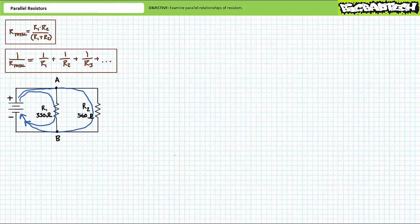Parallel configurations of resistors are those identified as having more than one path for current. Here's an example of a parallel circuit consisting of R1 having a value of 330 ohms between node A and B, and R2 having a value of 560 ohms also between node A and B. Any source current emanating from the positive terminal of the source has a choice of traveling through R1 or R2. Given two paths to choose from, the source effectively sees less resistance than if the circuit were composed of just a single resistor.